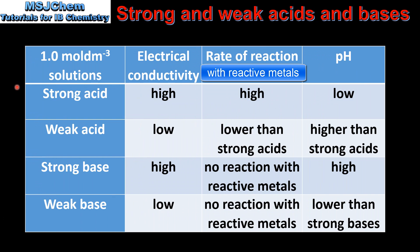Let's end with a summary. The strong and weak acids and bases all have a concentration of 1 mole per decimetre. A strong acid has high electrical conductivity, a high rate of reaction, and a low pH. A weak acid has low electrical conductivity, no reaction with reactive metals, and a high pH.